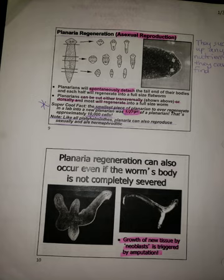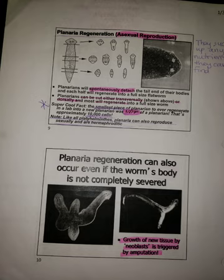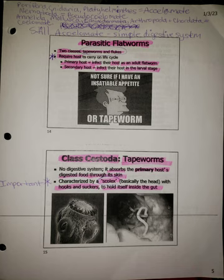Note that, like all platyhelminthes, planaria can also reproduce sexually and are hermaphroditic. Planaria regeneration can also occur even if the worm's body is not completely severed. This figure demonstrates the growth of new tissue by neoblasts, which is triggered by amputation.